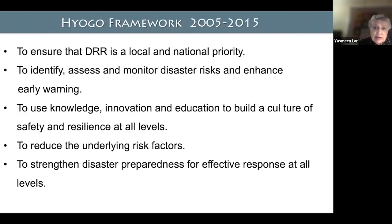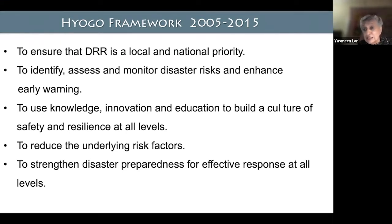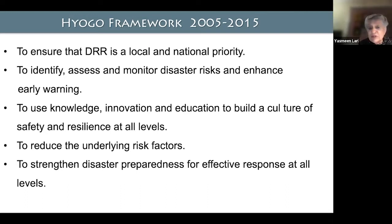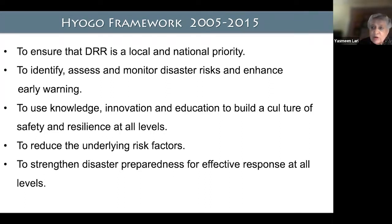The Hyogo Framework, which was supposed to be implemented by 2015, says it should be taken to local and national priority. We need to assess and monitor disaster risk, enhance early warning systems, use knowledge and innovation to build safely and with resilience at all levels — resilience is used a lot but not always taken seriously. We must reduce underlying factors, lowering the carbon footprint, and strengthen disaster preparedness for effective response.